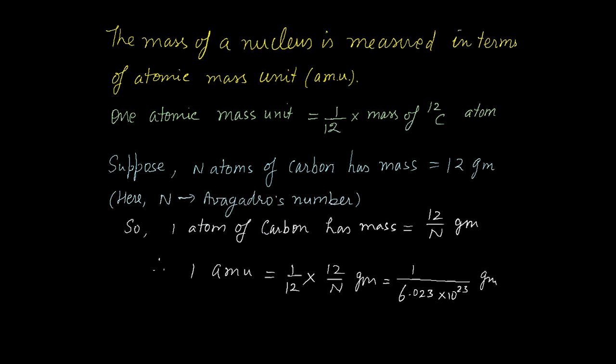The mass of a nucleus is measured in terms of atomic mass unit (amu). Atomic mass unit is defined as 1/12 multiplied by the mass of carbon-12 atom.